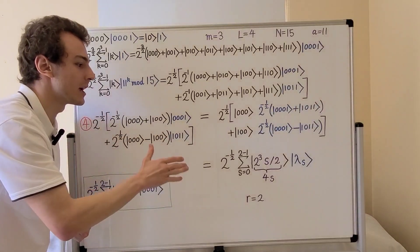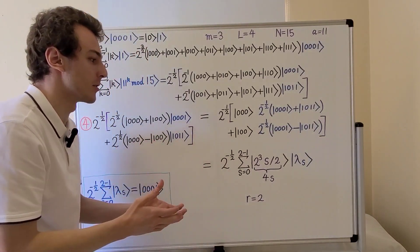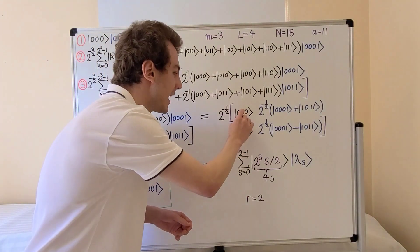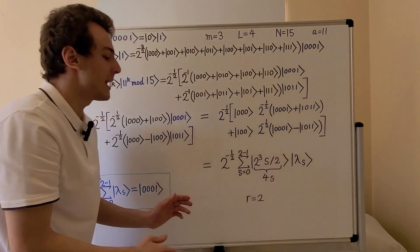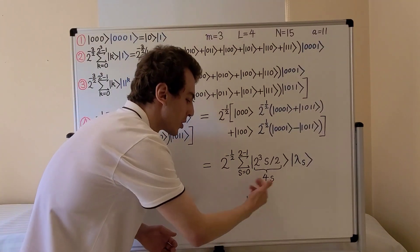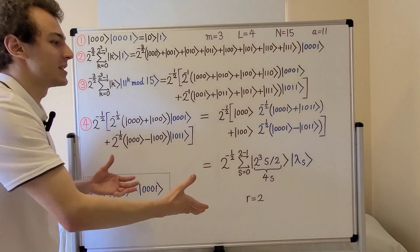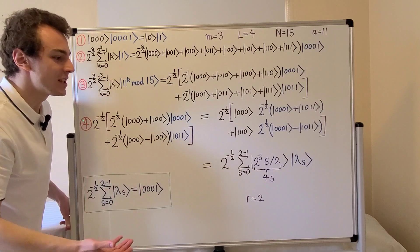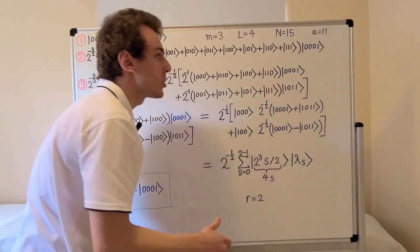After applying the inverse quantum Fourier transform to register one, we can now perform measurements on the first register. The measurement results will be either zero or four, from which we can conclude that the order is equal to two, since these values correspond to s over r times 2 to the m, giving r equals two.